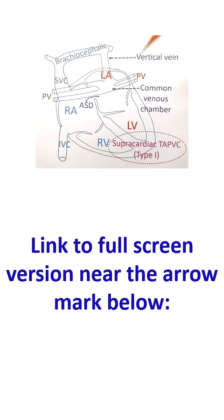If the atrial septal defect is very small, the patient may present with severe cyanosis needing intervention in the newborn period. If it is very large, sometimes it may go onto adult life without recognition, very rarely.